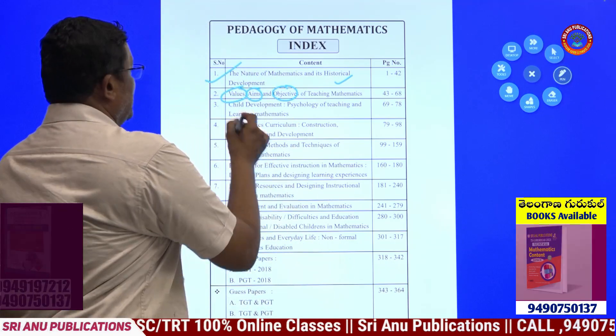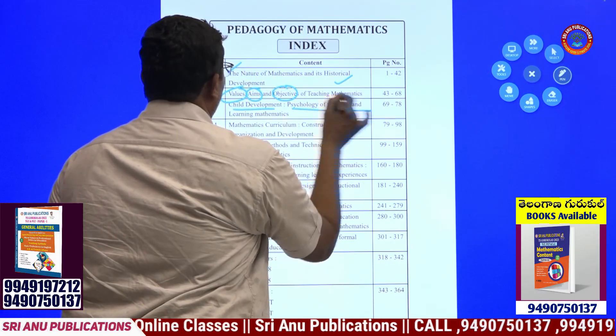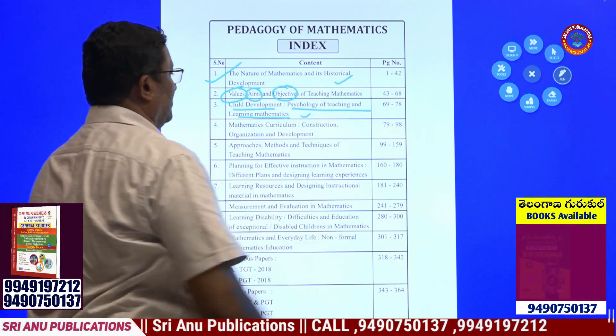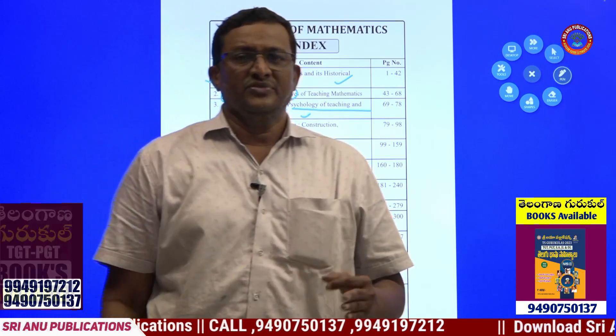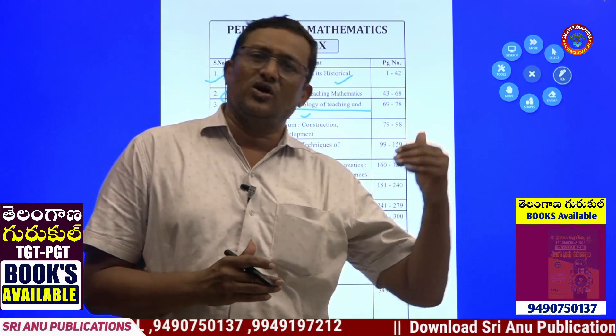The third chapter is Child Development and Psychology of Teaching and Learning in Mathematics. This is related to psychology.